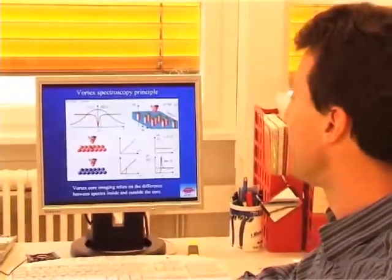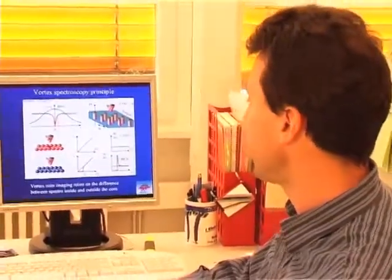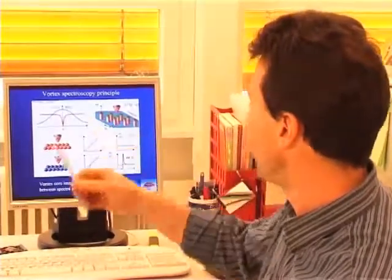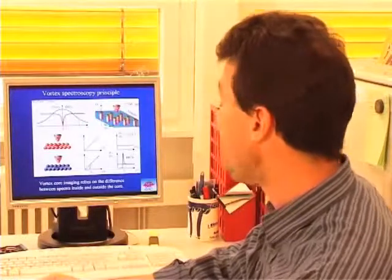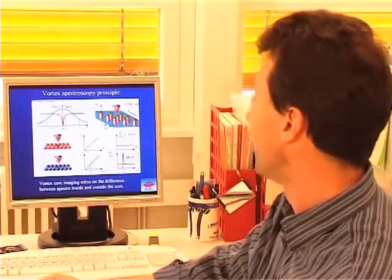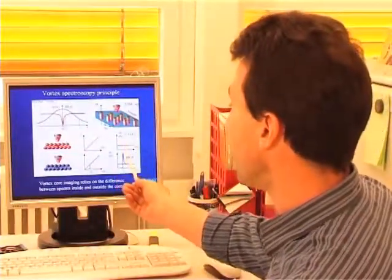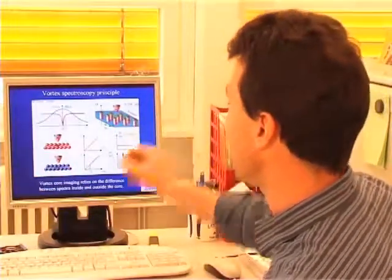So in the case of the presence of vortices, what you expect is a striking difference between the spectra which are acquired in the center of the vortices and the ones which are acquired outside the vortices. In that case, the center of the vortex will present a characteristic which is non-superconducting, while the outside of the vortex will present superconducting characteristics.